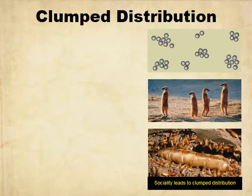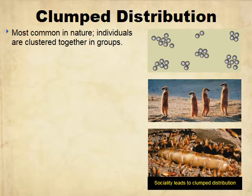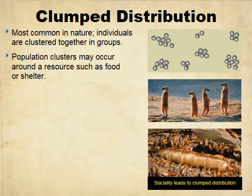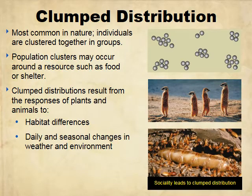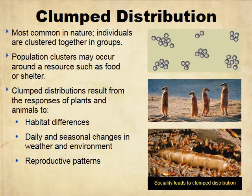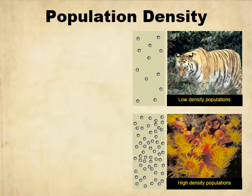Clump distribution is the one we most commonly find. Individuals are clustered together in groups. They can occur around a resource, shelter, or different types of habitat. This results from habitat differences, seasonal changes in weather and the environment, reproductive patterns, and social behavior — like a school of fish.